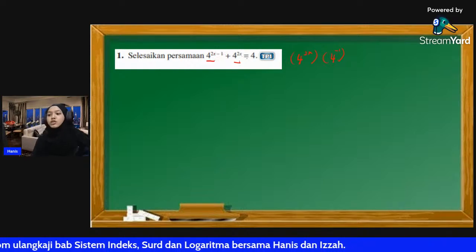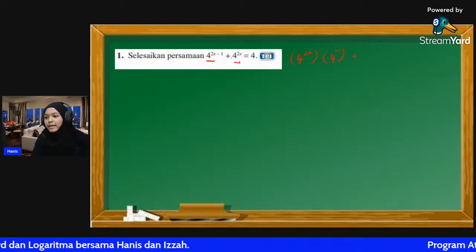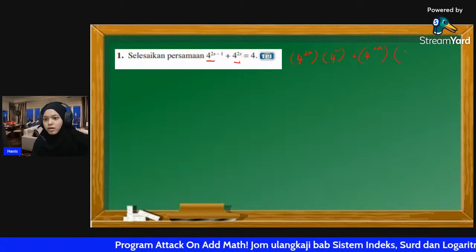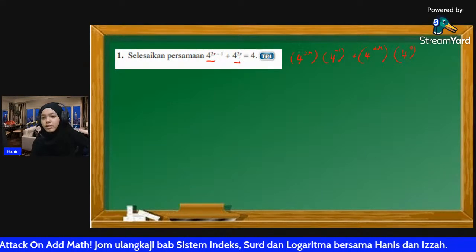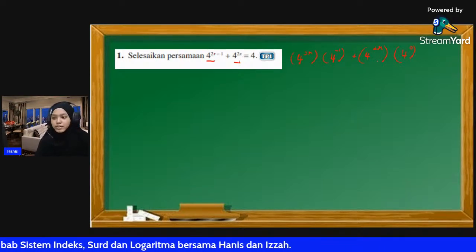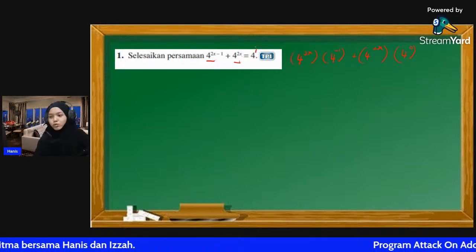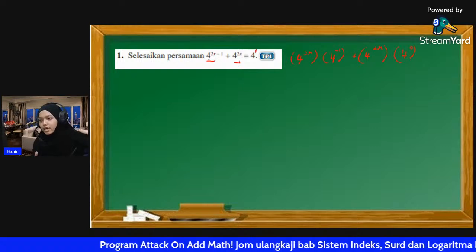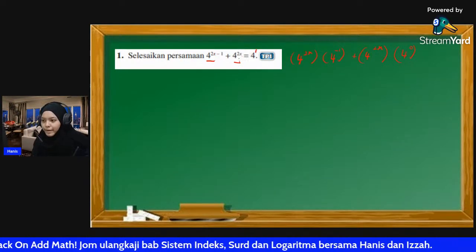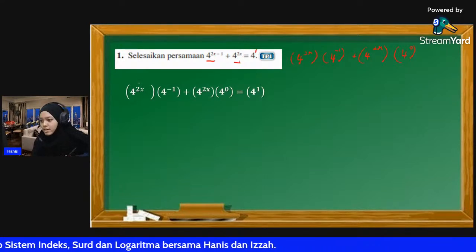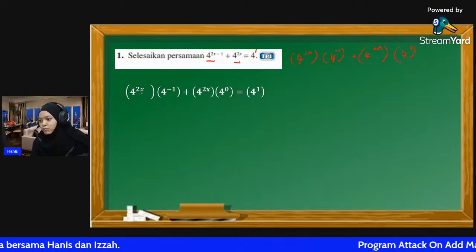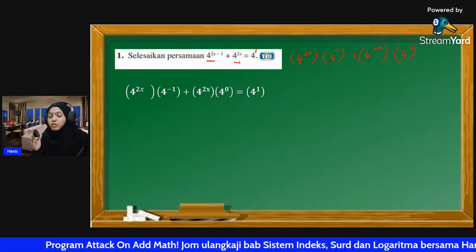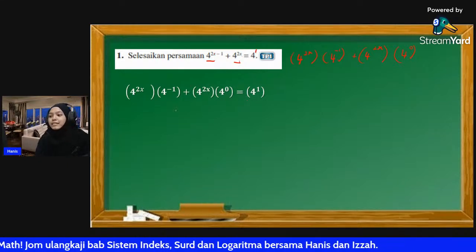Okay so kalau kita nak permudahkan kita buat macam ni. 4^(2x) asal dia pun ada nombor lain - dia tak tulis sebab 4^0 = 1, so tak perlu tulis. 4 pun asal dia ada 4^1. Jadi jalan kira pertama kita buka balik: 4^(2x) × 4^(-1), dan sama juga 4^(2x) × 4^0 = 4^1. Okay saya dah buka satu-satu: 4^(2x) × 4^(-1) + 4^(2x) × 4^0 = 4^1.